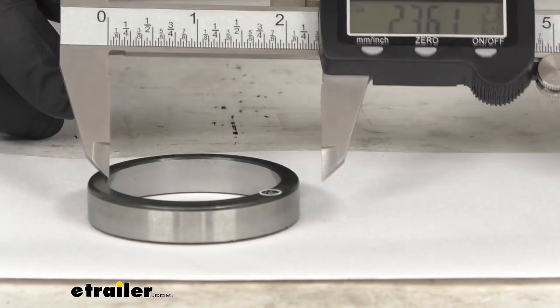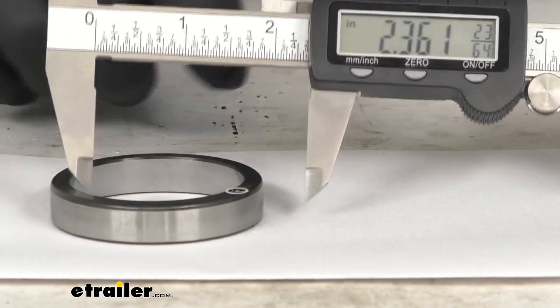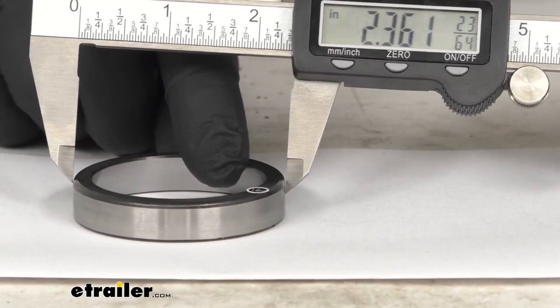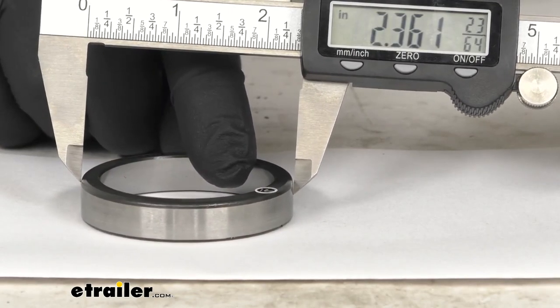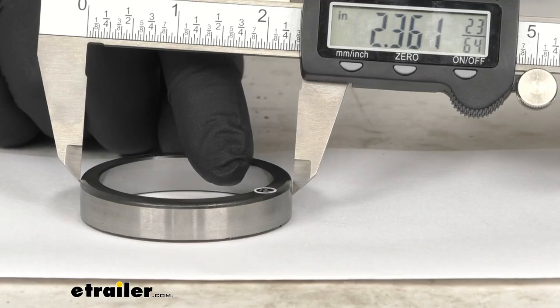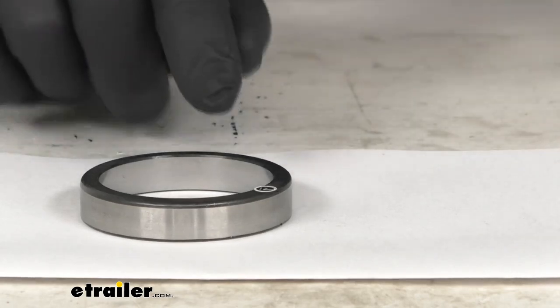And you want some calipers that go down to a thousandth of an inch. So I'm going to see if I can line this up here for you so you can see measuring the outside diameter. Let me bring that into frame there. So as you can see, we're sitting at that measurement of 2.3612 of an inch.